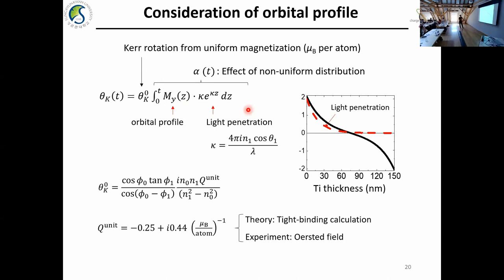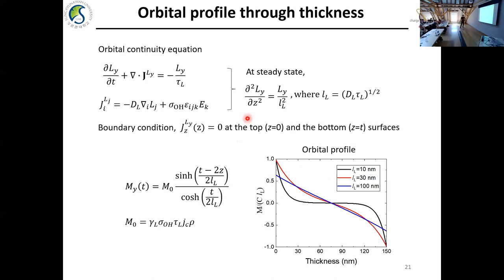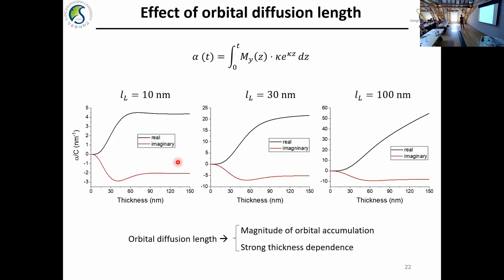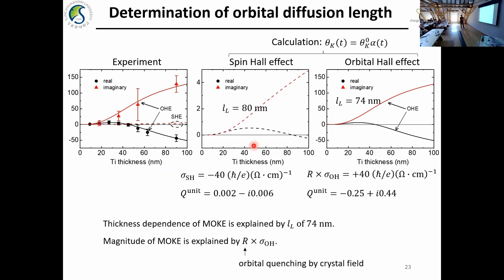As long as you know the orbital profile, you can calculate this thickness dependence. For the orbital profile, we assume it is similar to the spin situation: inside titanium you have orbital current generation, but at the bottom and top boundary the current is blocked. As a result, you have orbital accumulation at the top and bottom surfaces. The important parameter is the orbital diffusion length. A very short orbital diffusion length gives a narrow distribution; a very long diffusion length gives a nearly linear profile. Depending on the orbital diffusion length, the calculation result is quite different. This means we can determine the orbital diffusion length from the thickness dependence. From fitting the experiment, we determine the orbital diffusion length to be 74 nanometers.